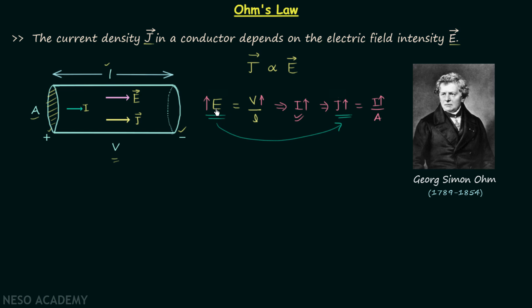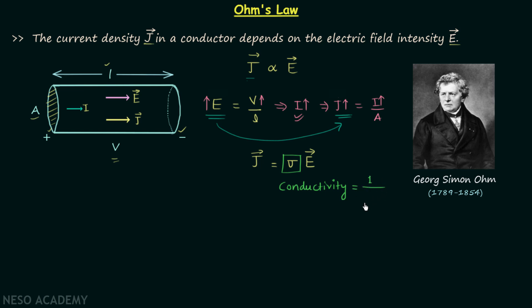Similarly, when you decrease electric field intensity, current density decreases. Therefore, current density J is directly proportional to electric field intensity E. Removing the proportionality sign, we get J equals sigma times E, where sigma is a constant known as conductivity. Conductivity sigma equals 1 over resistivity rho, where resistivity is denoted by rho.